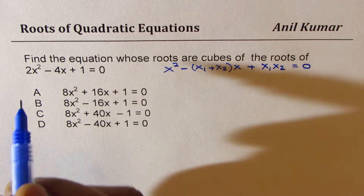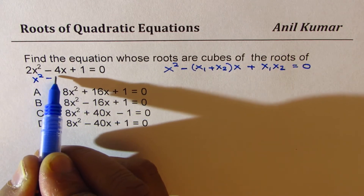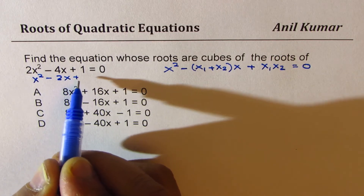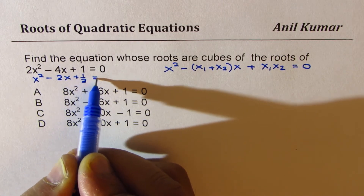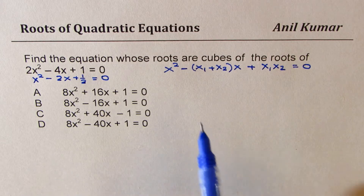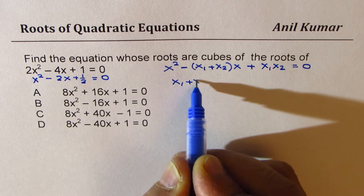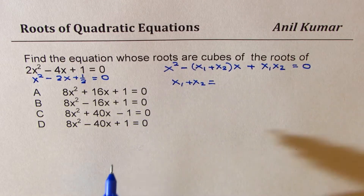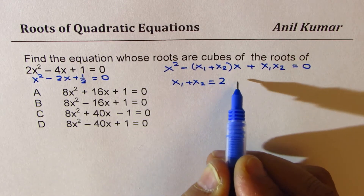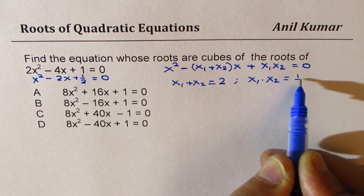Let's divide by 2. Dividing by 2, we get x squared minus 2x plus one half equals to 0. Comparing, we get the sum of roots x1 plus x2 equal to 2, and the product of roots x1 times x2 equal to one half.